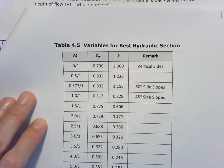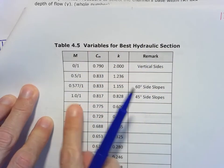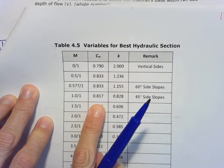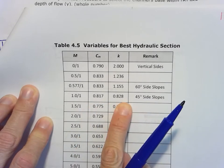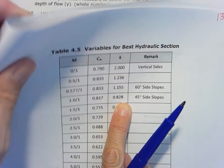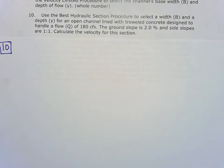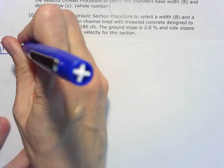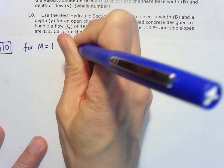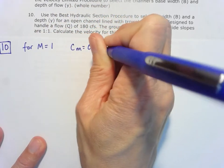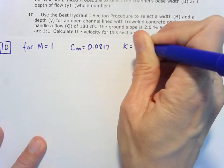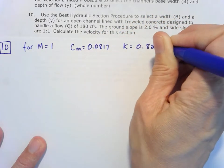So here it is. We have that 1 to 1, so our C_M value is going to be 0.0817, and our K is 0.828. Those are the values that we're going to need for this M value. C_M is equal to 0.0817 and K is equal to 0.828.